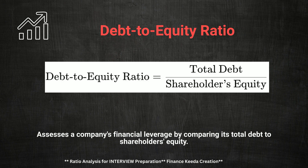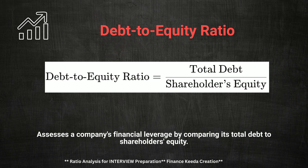As we continue our exploration of financial ratios, let's examine the Debt to Equity Ratio, which compares a company's total liabilities to its shareholder equity. The formula is Total Debt divided by Total Equity. A common interview question could be: what does a high Debt to Equity Ratio imply? A high ratio suggests that a company is heavily reliant on debt financing, which can increase financial risk. However, in certain industries, a higher Debt to Equity Ratio may be acceptable due to stable cash flows. Discussing the implications of this ratio in the context of industry standards will reflect your nuanced understanding of corporate finance.